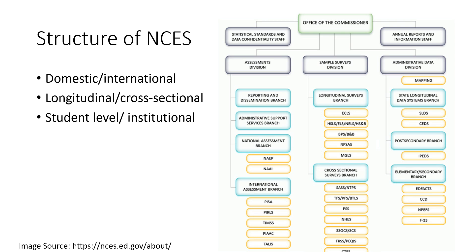As you can see, NCES data sets fall in a variety of categories. Some focus on domestic aspects of education, others on international aspects. Some surveys are longitudinal, following schools, students, or subjects over time, while others are cross-sectional, providing just a snapshot at one point in time. Some data sets are student-level, such as the ECLS, while others are institutional, such as IPEDS. Depending on your research questions, there is probably some NCES data set that can provide secondary data to address them. Let's now look at a few of these data sets in more detail to give you a flavor for the type of questions and research that can be conducted.